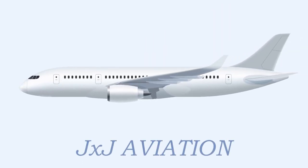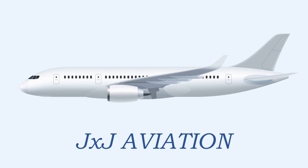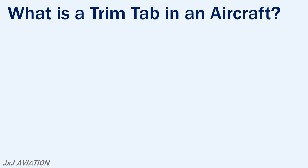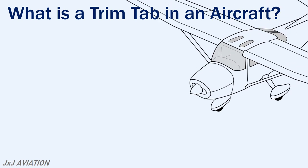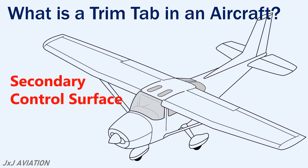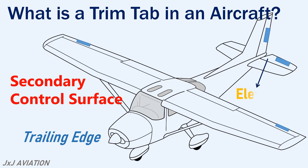Hello and welcome to GXJ Aviation. In this video we will be looking at what are trim tabs, the types of trim tabs, and why trim tabs are required on an airplane. First, let's see what is a trim tab in an aircraft. On an aircraft, a trim tab is a secondary control surface which may be installed at the trailing edge of a primary control surface such as the elevator, rudder, or the ailerons.